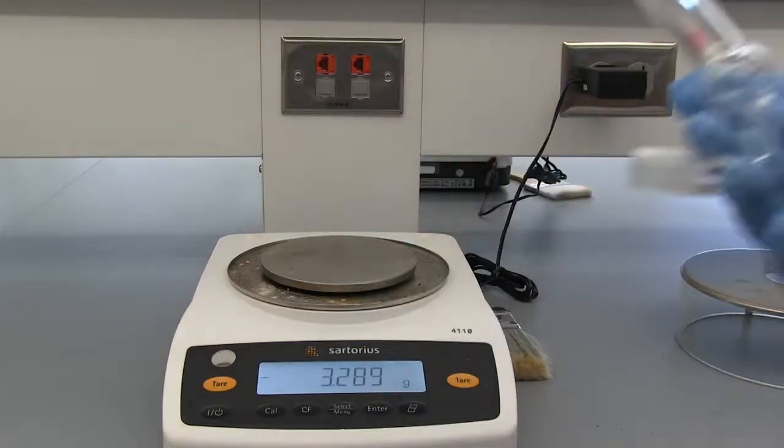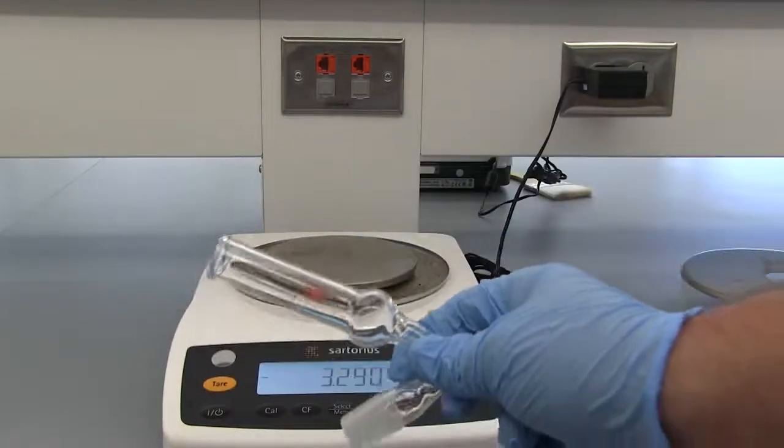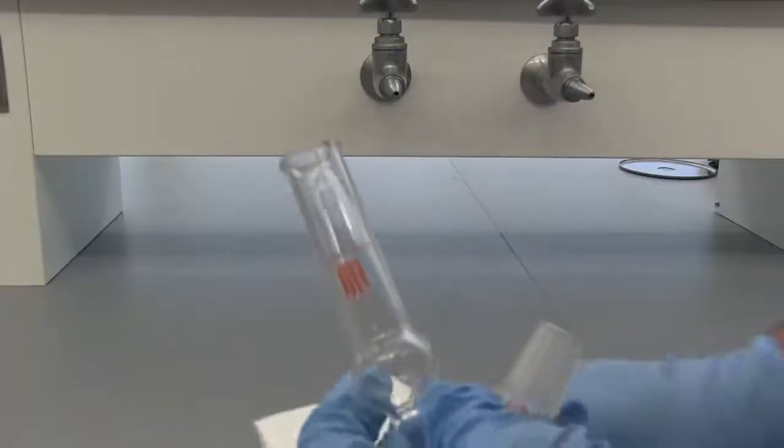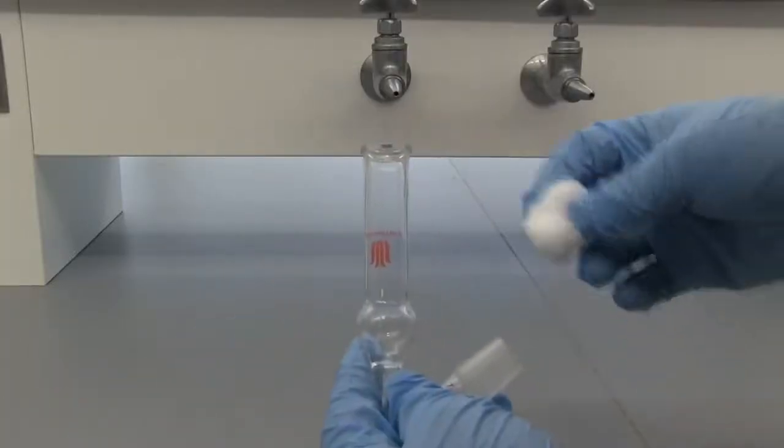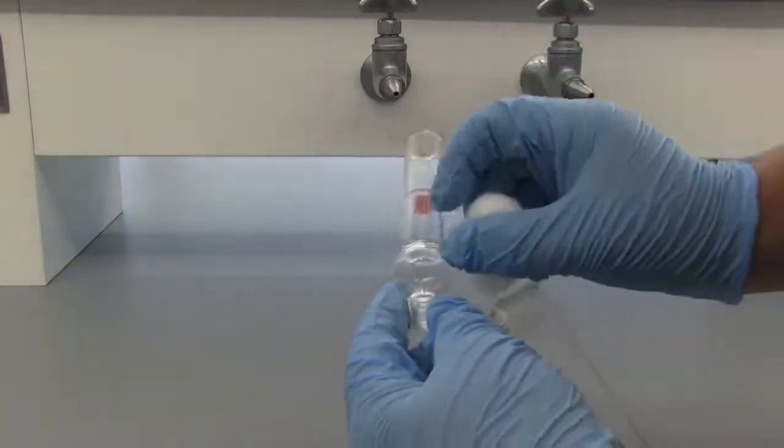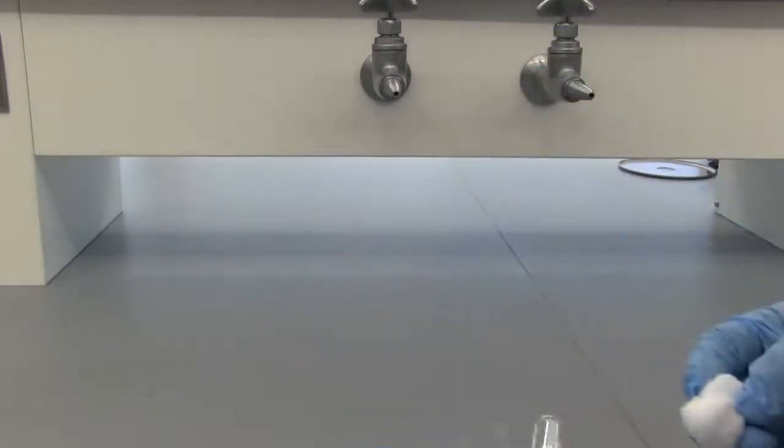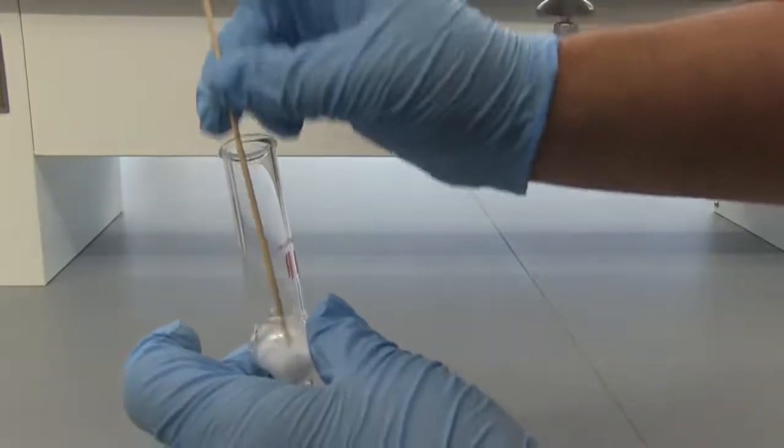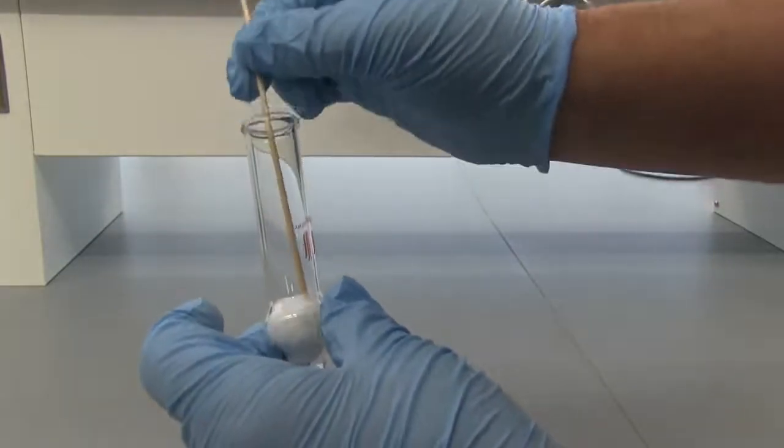All right, next we're going to add our diethyl ether. But first we want to go ahead and prepare our drying tubes so that we can put it straight on after we get the diethyl ether in there. All right, so preparing our drying tube, we're going to need some cotton at the bottom, cotton at the top, and we're going to fill with calcium chloride in between. So go ahead and tear a decent-sized piece of cotton. So we've got the cotton in there. I'm going to use a wood applicator stick to just help push it down.